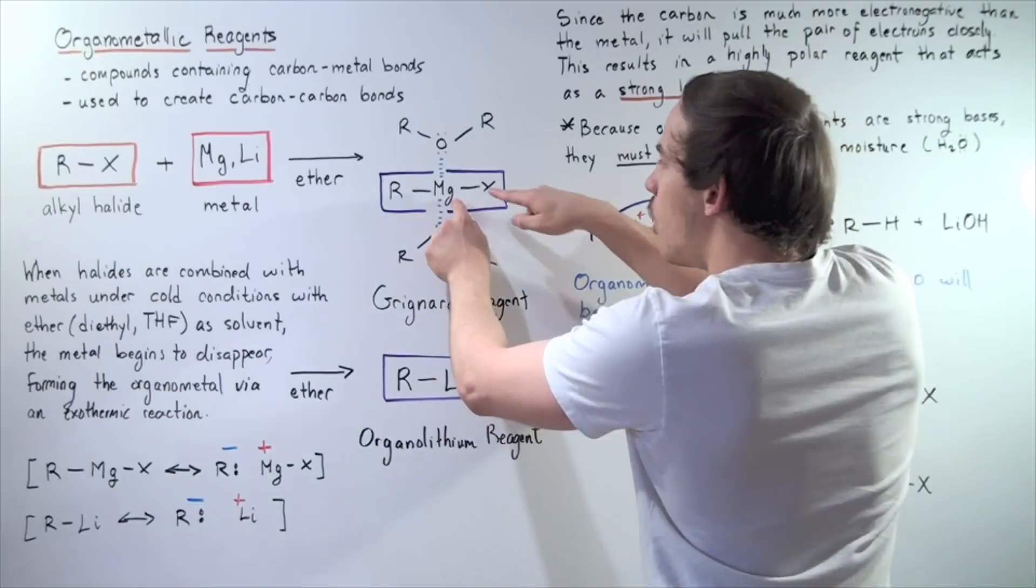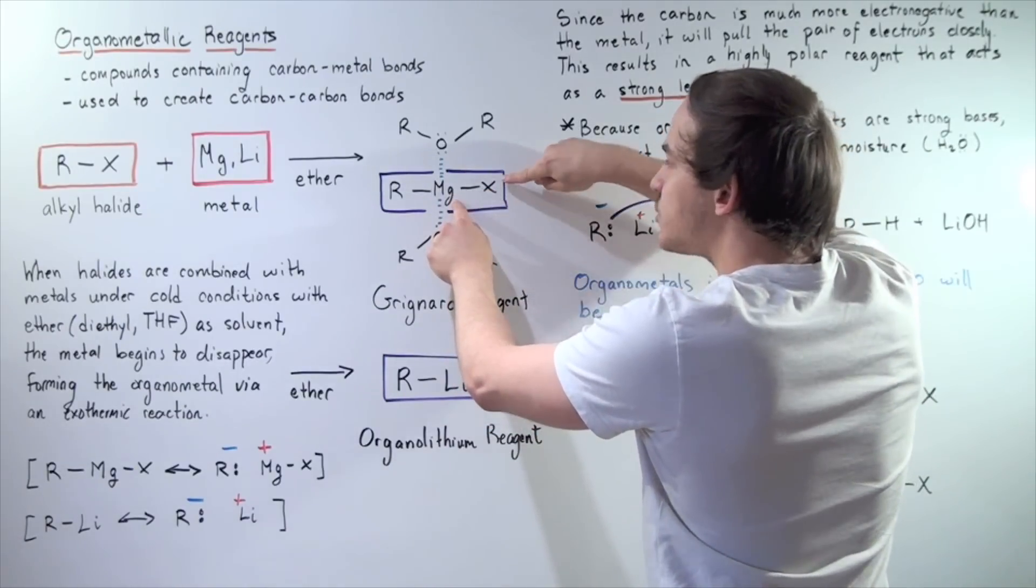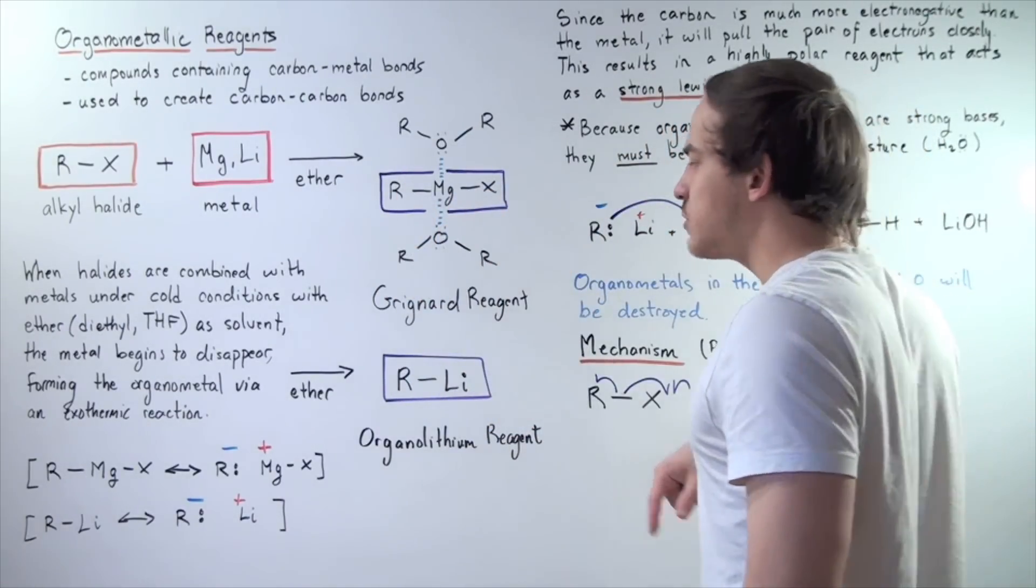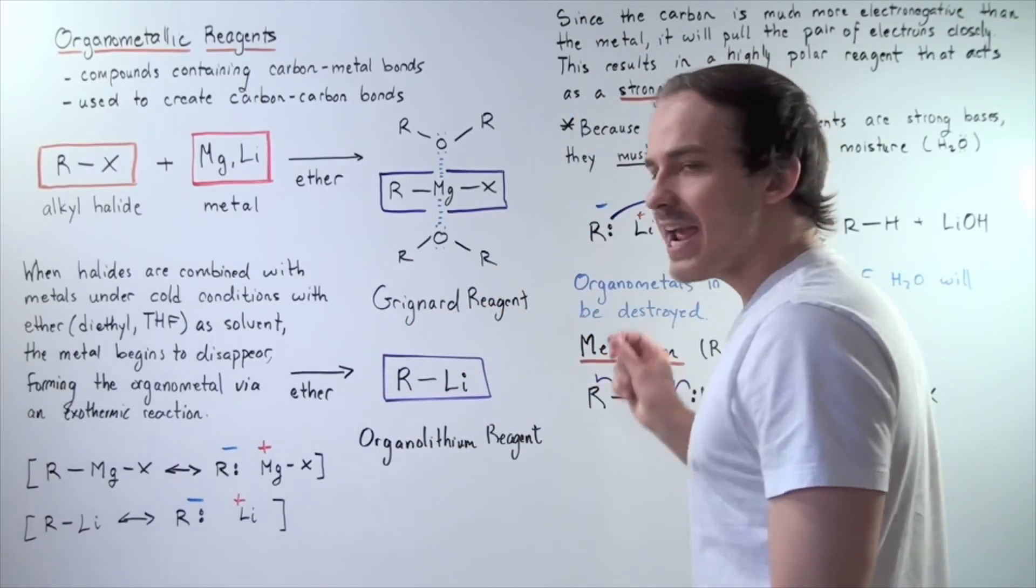And this Mg also binds to our halogen. So we have the following organometallic reagent, known as Grignard reagent.